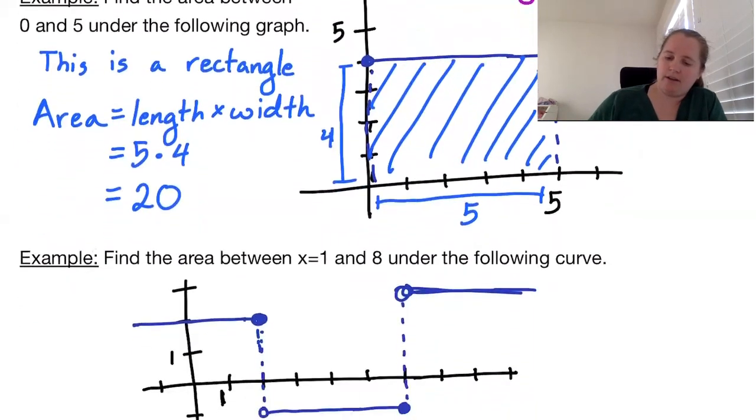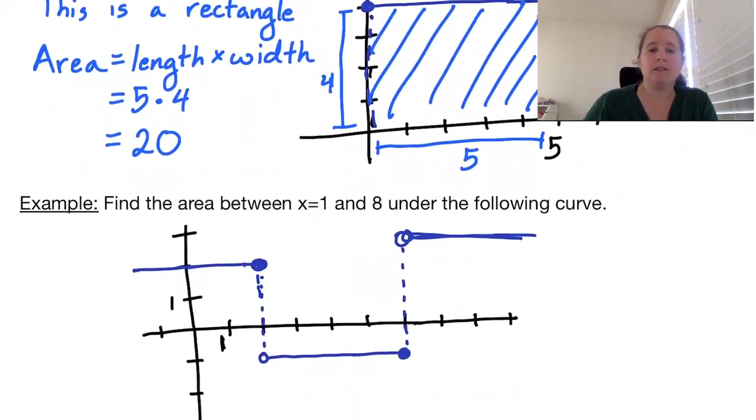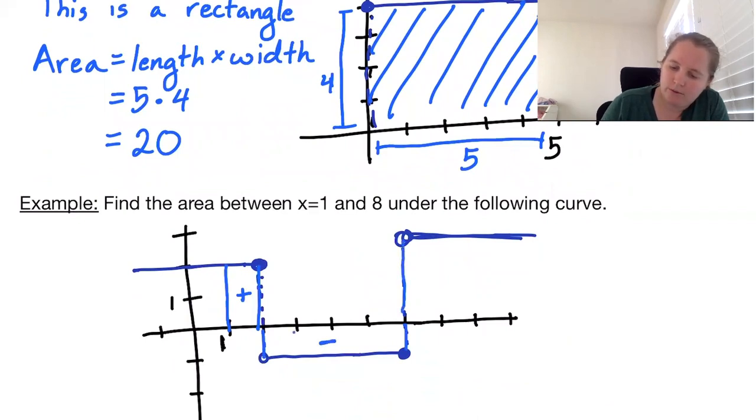Now let's look at this curve that's in pieces. Our job is to find the area between x equals 1 and 8 which is under the curve. Again if it's above the axis it's considered positive area. If it's below the axis it's considered negative area. And then 1, 2, 3, 4, 5, 6, 7, 8. We're stopping at 8.